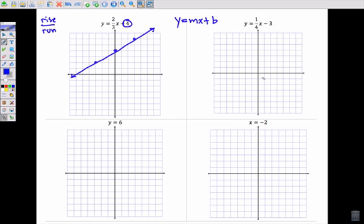Similar for this second one, I'm going to start down here at negative 3. And then my rise over run is 1 over 4. So I rise 1, run 1, 2, 3, 4. And again, I can go backwards if I want to. So I got those 3 points and there's my line.